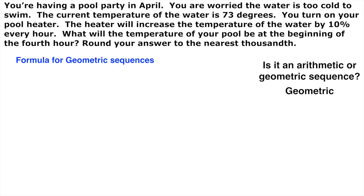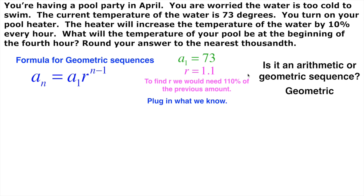All right, well, we're going to bring in our formula for geometric sequences here and start plugging in some information that we know. Now, we know what the a of 1, the first term in the sequence, is 73. That's what we started with. That was the temperature of the pool when we started. r is a little bit tricky on this one. It's 10% more than the previous one. So in other words, it's 110% of the previous amount. So r, in this case, would be 1.1. We're just converting this 110% to a decimal form is really all we're doing. Okay, so let's plug that in. We've got 73 times 1.1. And this is all raised to the n minus 1.